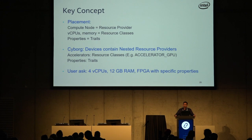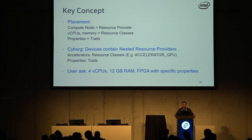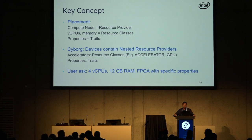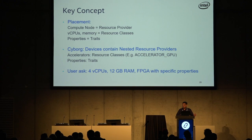From a user's point of view, a typical request would list something like four vCPUs and 12 GB of RAM as resources. In addition, you'd specify additional resource classes — like an FPGA accelerator resource class — and properties would be expressed as traits. Using your standard Nova-on-placement mechanisms and the existing request spec mechanisms, you can phrase your request for accelerators in different ways.